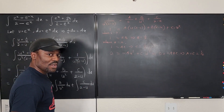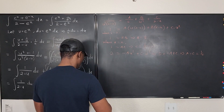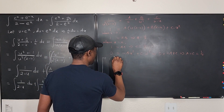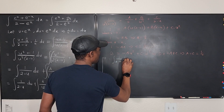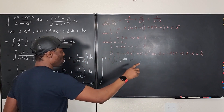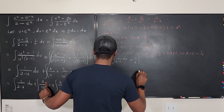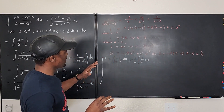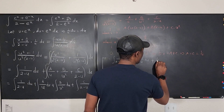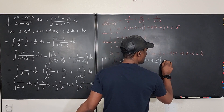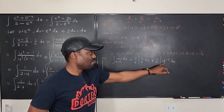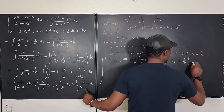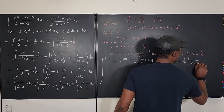Now I can write the full integral. This is the integral of 1 over (2 minus u) du, plus 1/4 times the integral of 1 over u du, plus 1/2 times the integral of u to the negative 2 du — where we apply the power rule — plus 1/4 times the integral of 1 over (2 minus u) du.